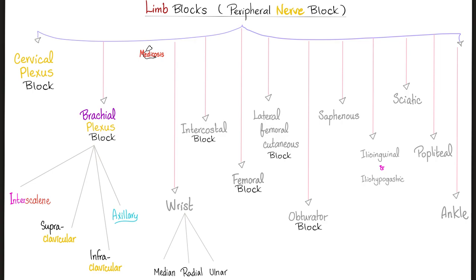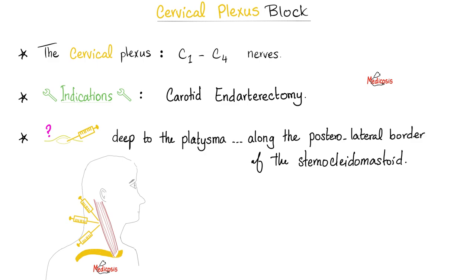Brachial plexus block is divided into interscalene block, supraclavicular block, infraclavicular block, axillary block. At the wrist, you can block any nerve that's close by the wrist: the median, radial, or ulnar. Let's start in the beginning by the cervical plexus block. Where the flip is the cervical plexus? C1 through C4. How about C5 through T1? That's the brachial plexus, doofus. Be careful. When should I use it? If the surgeon wants to perform carotid endarterectomy or any procedure in this area. Where should I stick the needle? Deep to the platysma muscle, along the posterolateral border of the sternocleidomastoid muscle. Be careful.